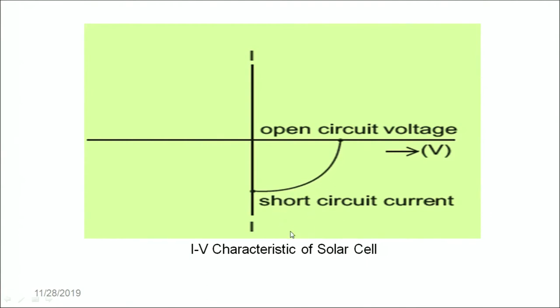This represents the IV characteristic curve of the solar cell. So in today's lecture, we talked about different kinds of diodes — the zener diode, the photodiodes, the light emitting diodes and the solar cells. Thank you learners.